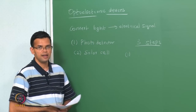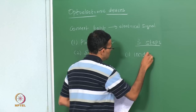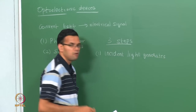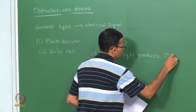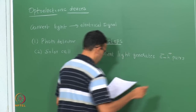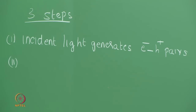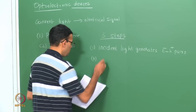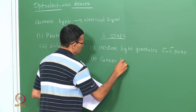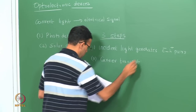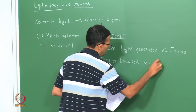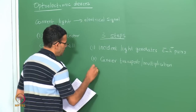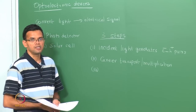In the first step, incident light generates carriers — that is, electron-hole pairs — in the device. Once these carriers are generated they need to be transported to the respective electrodes. Sometimes some sort of carrier multiplication, also called gain, is also possible. Finally, these carriers are extracted out of the device in the form of a current.